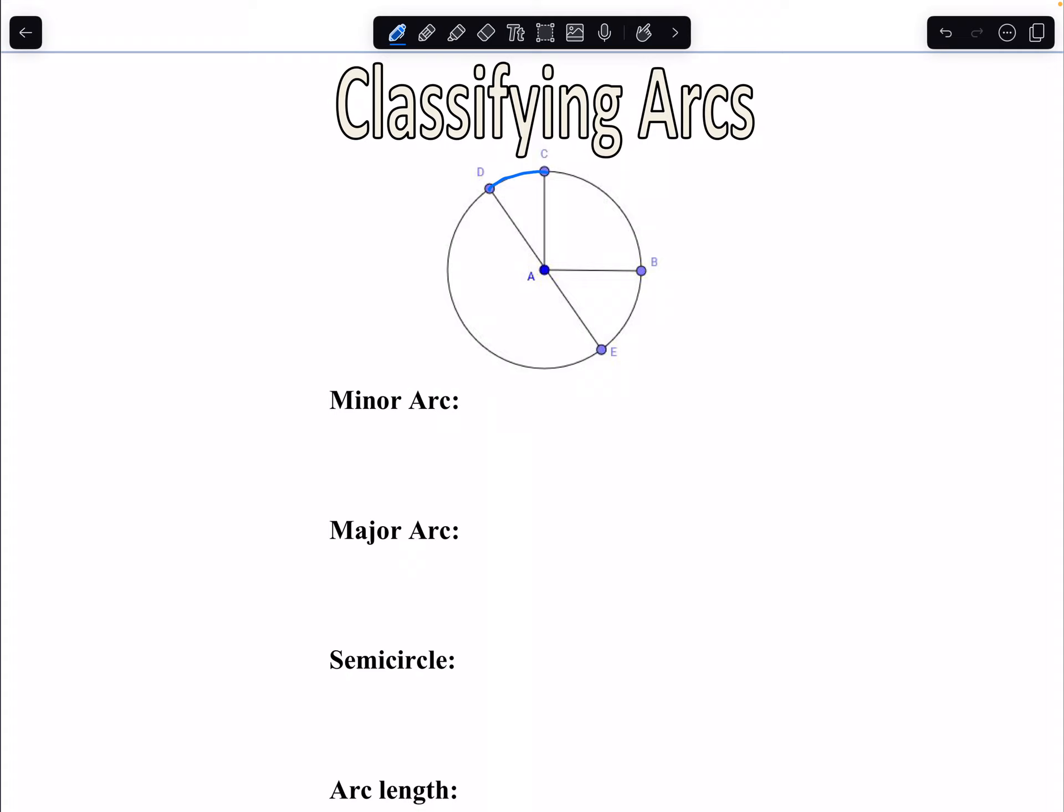A minor arc is any arc that measures less than 180 degrees. So anything that's less than half of the circle. Our full circle is 360 degrees. So anything less than half would be considered a minor arc. So here's an example like arc DC is a minor arc. Arc CB is a minor arc. BE, and there's so many combinations here, DB, we can keep going. But we're looking for part of the circle that measures less than 180 degrees.